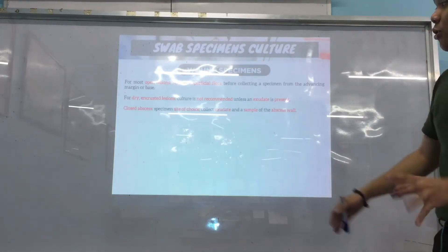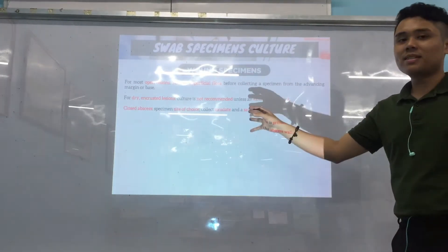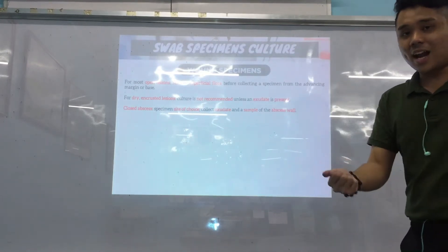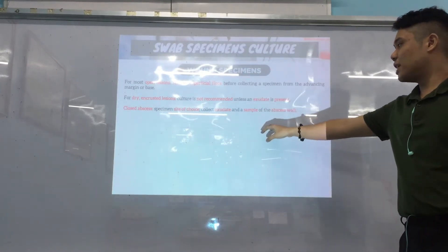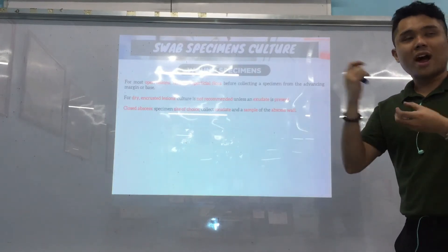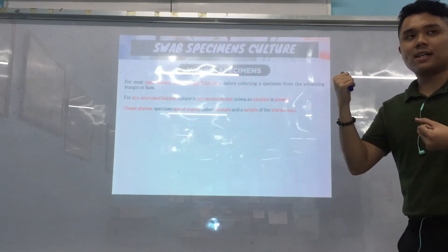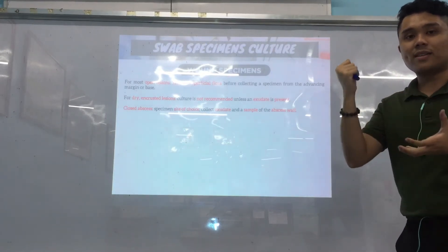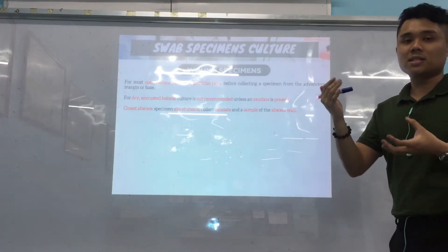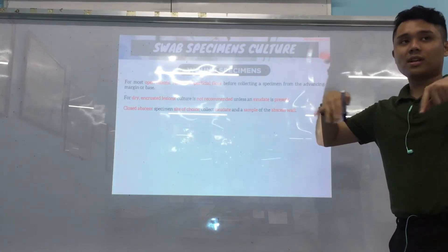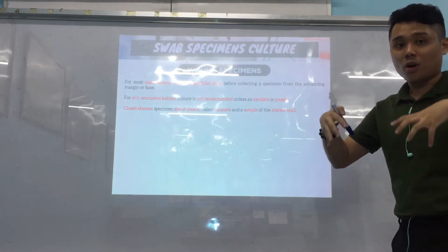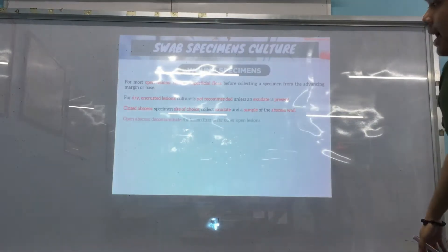For closed abscess, it's the specimen site of choice, especially for anaerobes. You collect the exudate and a sample of the abscess wall — aspirate the fluid or pus inside, and also collect samples from the abscess wall.